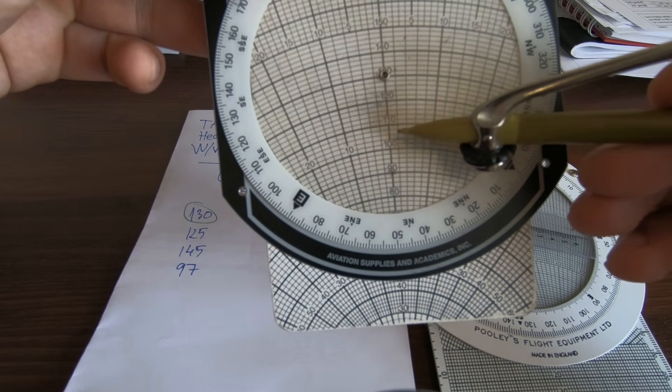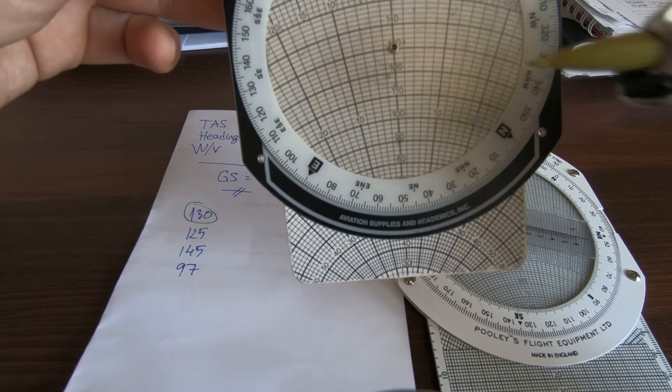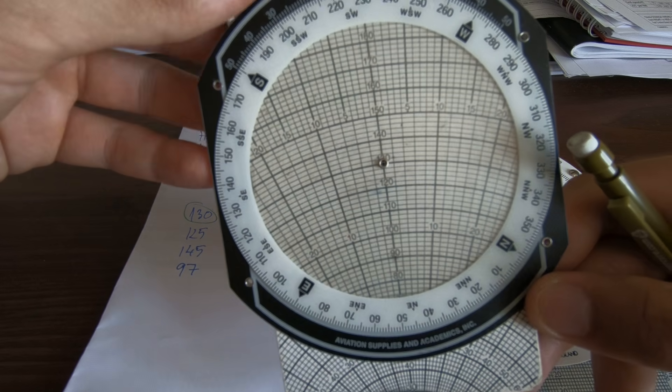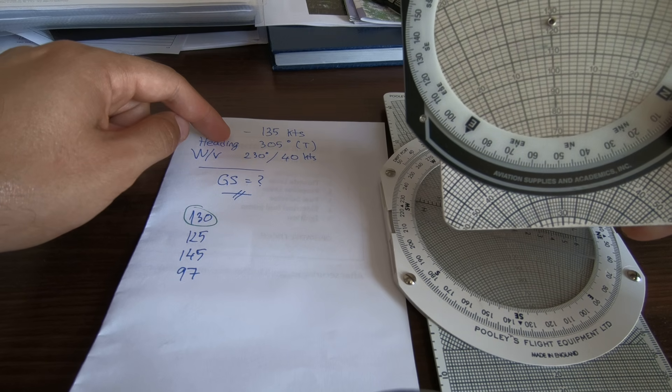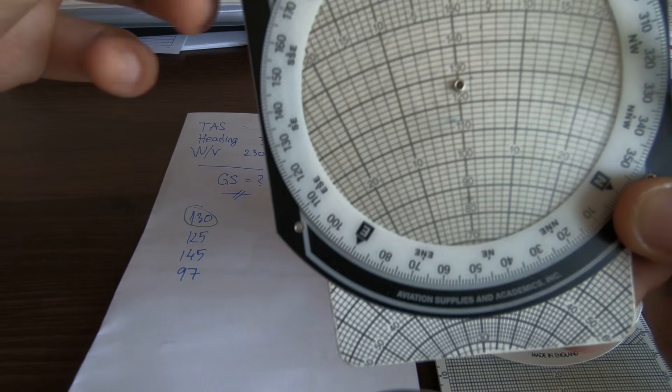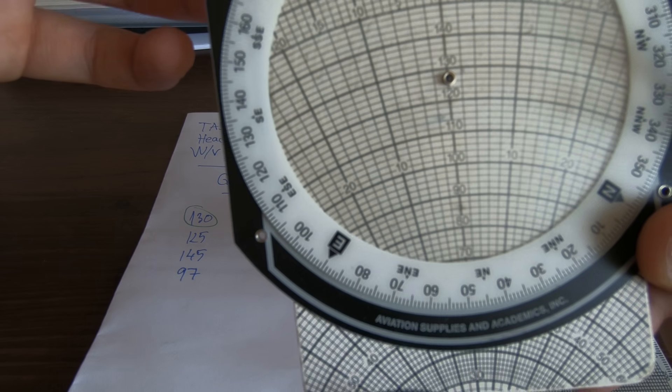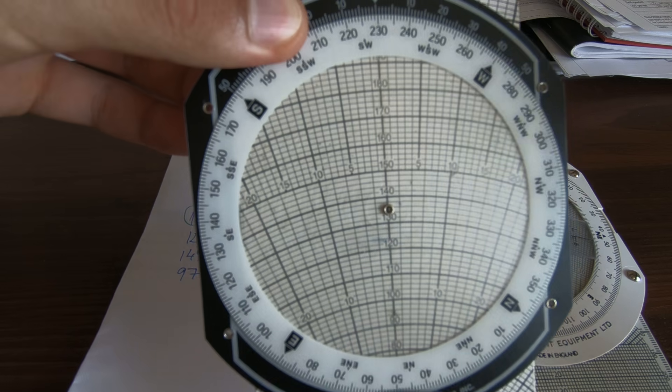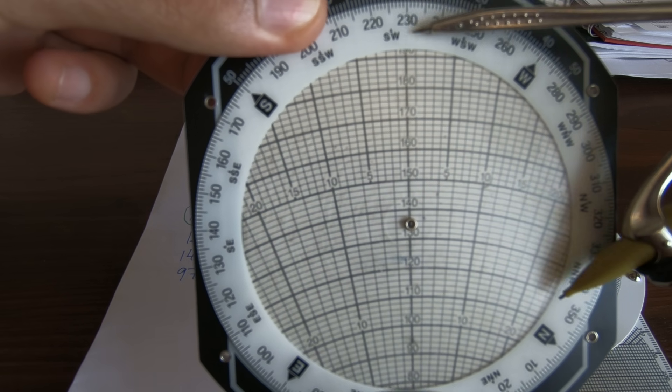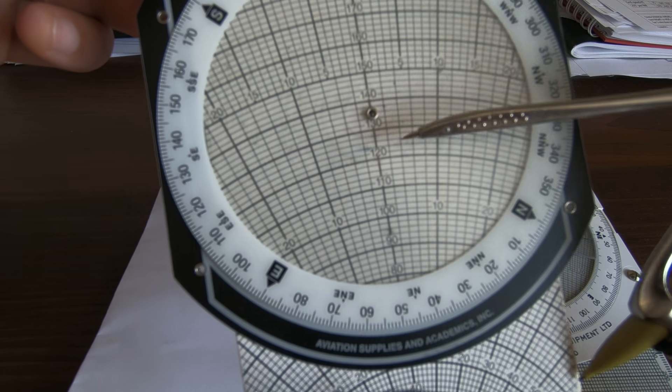So 130... I'm sorry, it was 135, my apologies. Just make sure you always read the correct numbers, otherwise you get a different result. So 135 is over here, and then make sure 230 is the wind from 230, and it's 40 knots.